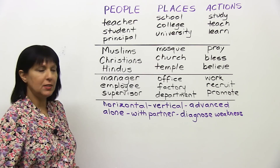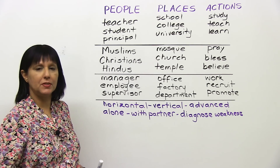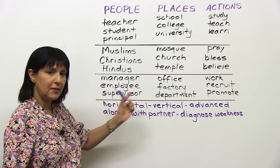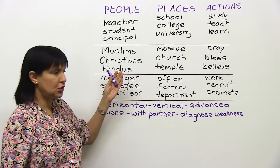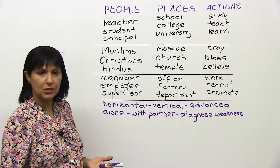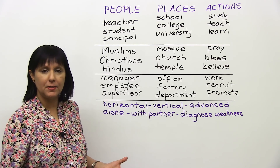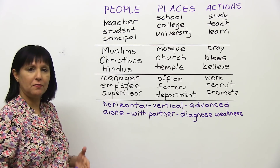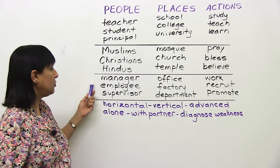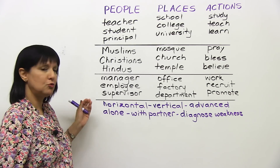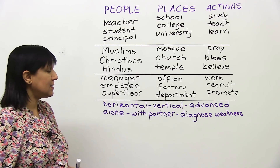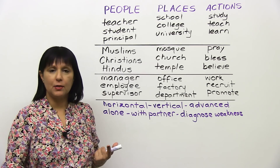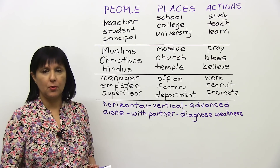In the area of religion, people could be Muslims, Christians, Hindus; places — mosque, church, temple; actions — pray, bless, believe. These are not the only examples — I'm just showing you how to do it. In the field of business, for people: manager, employee, supervisor; for places: office, factory, department; and for actions: work, recruit, promote.